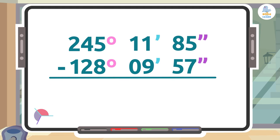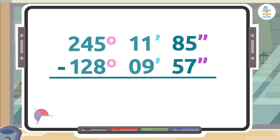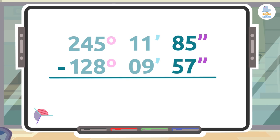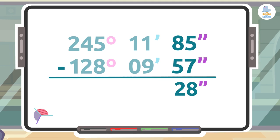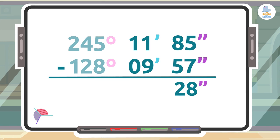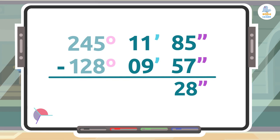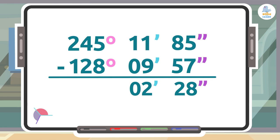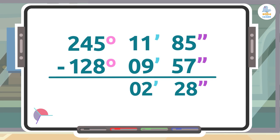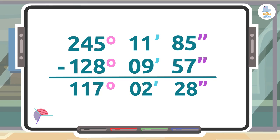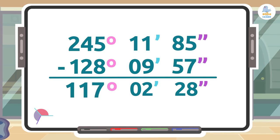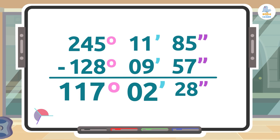Now we can subtract. Here we go: 85 seconds minus 57 seconds is 28 seconds. 11 minutes minus 9 minutes is 2 minutes. And 245 minus 128 is 117 degrees. So our final result will be 117 degrees 2 minutes and 28 seconds. Good job!